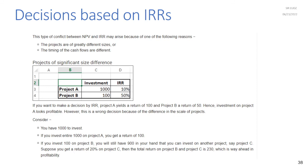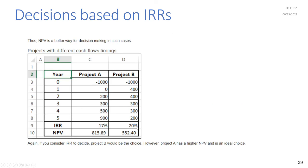Conflicts between NPV and IRR arise for two reasons: projects of greatly different sizes, or different timing of cash flows. For size differences: Project A yields 100% return and Project B yields 50%, so IRR favors A. But if you invest 1,000 total — 100 in Project B plus 900 in Project C at 20% — total return is 230, far exceeding Project A's 100 return. Thus NPV is a better basis for decision-making.